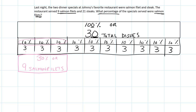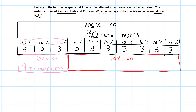We can also figure out what percentage were steaks. There were 21 steaks, and jump counting by threes: 3, 6, 9, 12, 15, 18, 21 — that's going to be 70%. So 70%, or 21 steaks. Again, we have both answers, and that's really going to help us problem solve a lot better and understand the question a lot more.